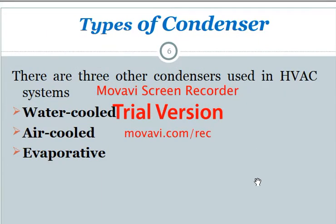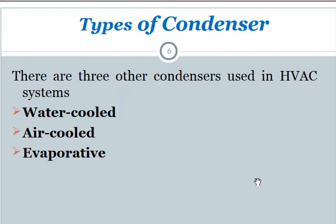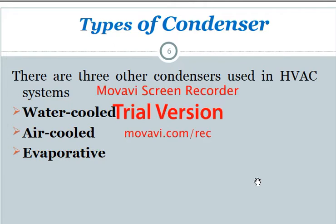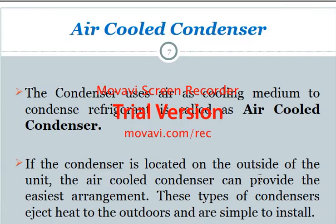We have three types of condensers: the first one is by water coolant, the second one is by air coolant, and the last one is by evaporative cooling. We will go one by one to study each type, starting with the air-cooled condenser.